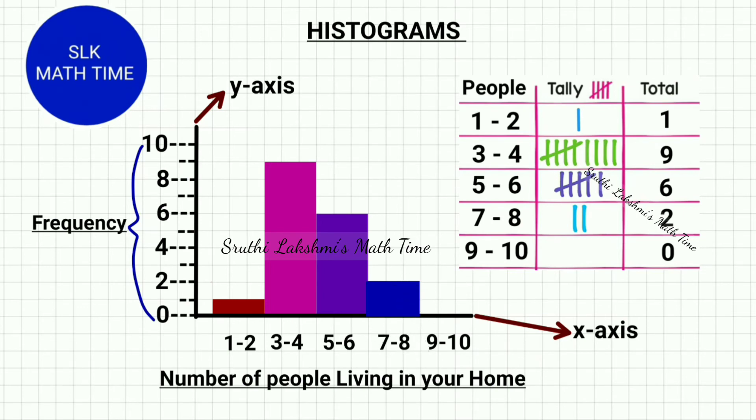But a bar graph instead of ranges or numbers has categories like blue, pink, purple, red. So that's what they are saying here.